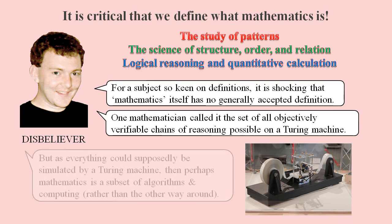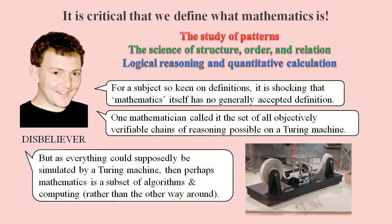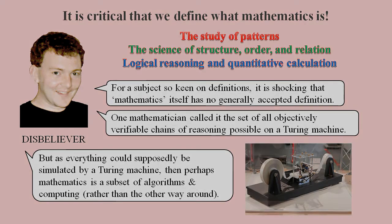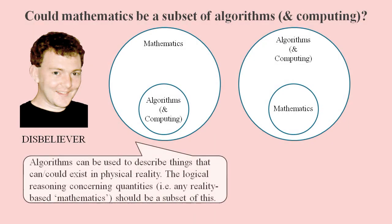But everything can supposedly be simulated by a Turing machine. And so to avoid endless recursion mathematics would need to be a subset of algorithms and computing rather than the other way round. Mathematicians would detest the idea that mathematics should be relegated to being just a subset of engineering. But perhaps that's the way it should be. In the reinvention of mathematics it might make sense to call it logical reasoning concerning quantities and for it to be a subset of algorithms and computing.